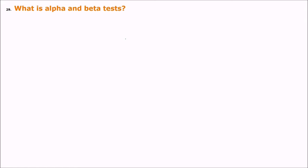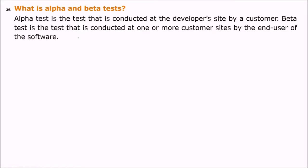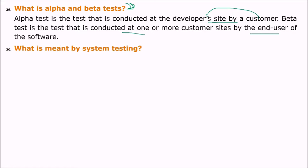What are alpha and beta tests? Both come under the category of acceptance testing. An alpha test is conducted at the developer's site by the customer. A beta test is conducted at one or more customer sites by the end user of the software.